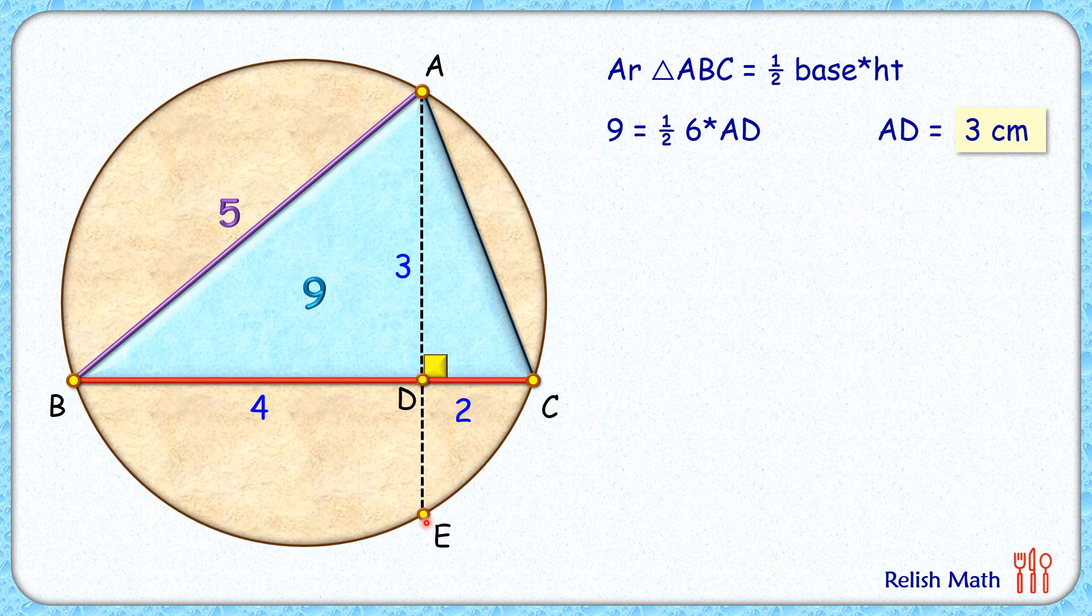Now let's assume this length DE is x, and we can find the value of x by applying intersecting chord theorem, where chord BC and AE are intersecting at point D. As per intersecting chord theorem...